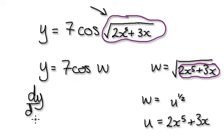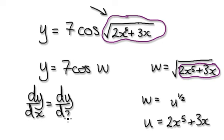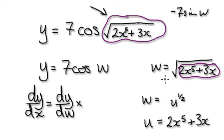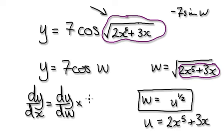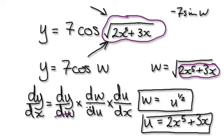So here, if you want to find dy by dx, you would have to do this. It's going to be dy by dw — so you differentiate y with respect to w, which would be minus 7 sine w — and then you've got to times it with dw over du, and then times it with du by dx. The whole thing gives you your dy by dx, because this bubble is so complicated. We've got a function within a function, so that would then give you dy by dx.